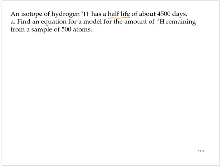What we need to understand from this problem is the half-life is 4,500 days. So if we have an initial amount of 500, let's go to a table. Let D represent the number of days, and let H of D represent the amount of H3 remaining.